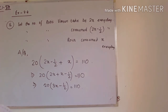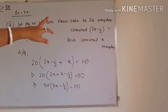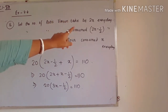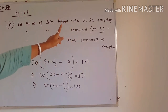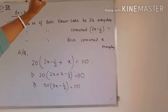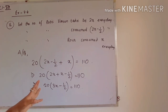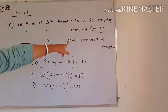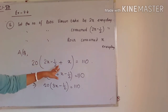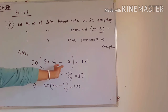Question number 16: It is given that Varun takes a certain number of rotis during lunch but always wastes half a roti. Let the number of rotis Varun takes be 2x every day. So he consumed 2x minus 1 by 2 rotis, because half a roti he always wastes — we subtract that half from the total rotis he took. Rosa consumed x rotis. If they are consuming this much every day, then in 20 days we multiply 20 with the total, which is the total number of rotis Varun and Rosa consumed.